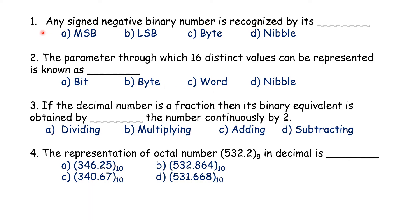Let us discuss the first question: any signed negative binary number is recognized by its most significant bit (MSB). If the MSB is one, then it is negative. If it is zero, then it is positive. So if the value is one, it is negative; if zero, it is positive.